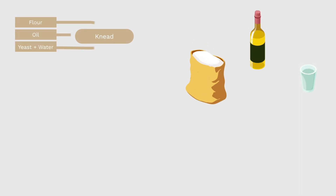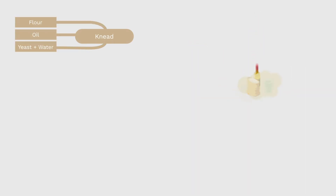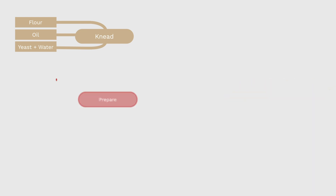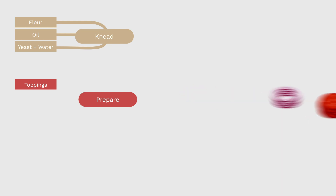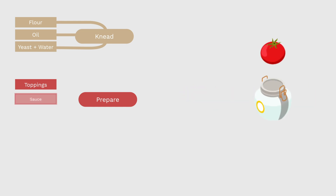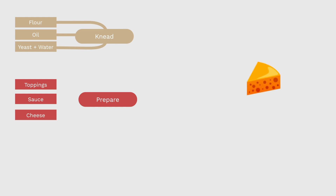Let's represent the process of baking a pizza as a workflow. I have broken down the entire process into smaller tasks. The first task can be kneading the dough — it will require some flour, oil, yeast and water. Another task can be preparing toppings, getting sauce and cheese.